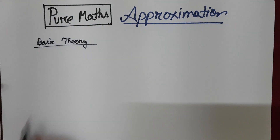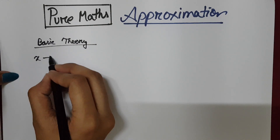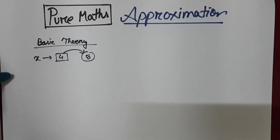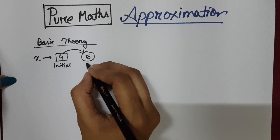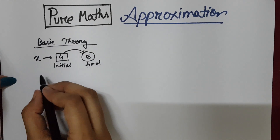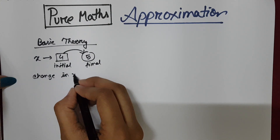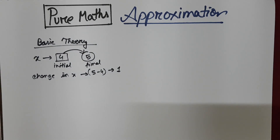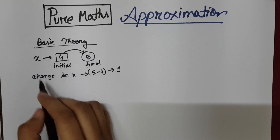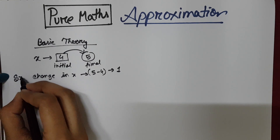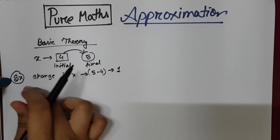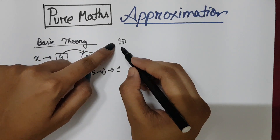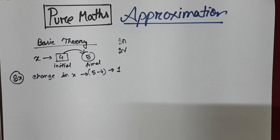Suppose we have a variable x and the value of x is 4. If I increase the value and the final value is 5, then 4 is your initial value and 5 is your final value. So change in x is 5 minus 4, which is 1. We denote this change in x using the symbol del x. So del x represents change in x. If we need to write change in radius, we write del r; similarly, change in volume we write del v.